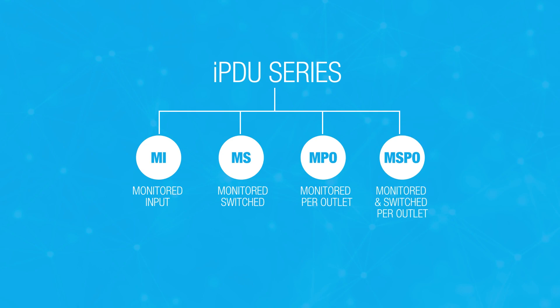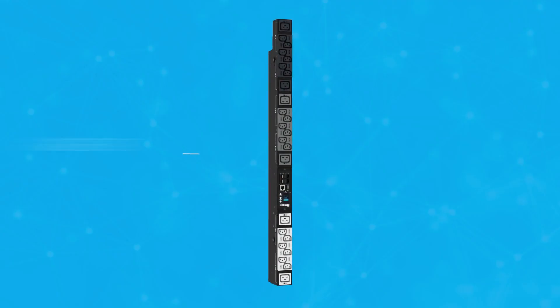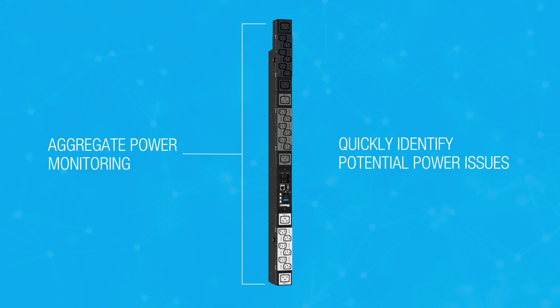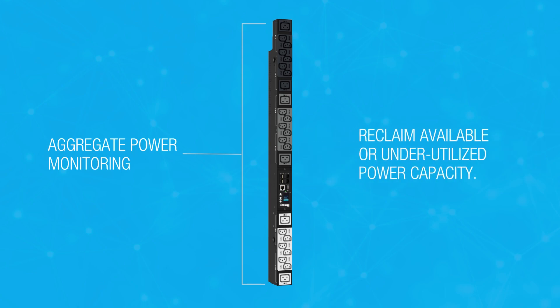Let's take a look at each of those in more detail. The monitored input, or MI, PDU series monitors the aggregate power of all the outlets of the entire PDU. This allows you to quickly identify potential power issues and take corrective action. Monitoring aggregate power also lets you identify underutilized PDUs and reclaim that power capacity.